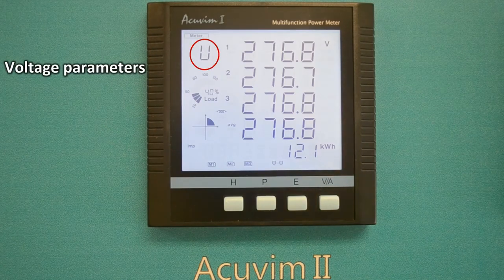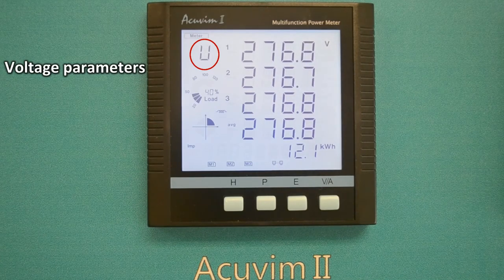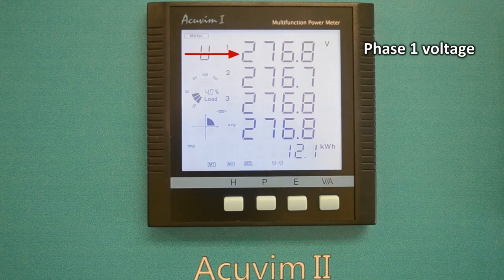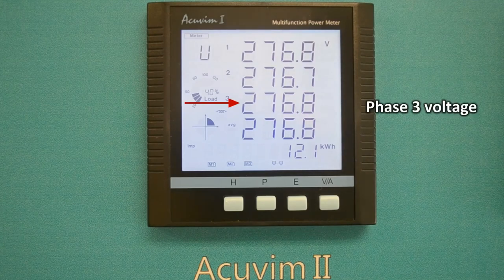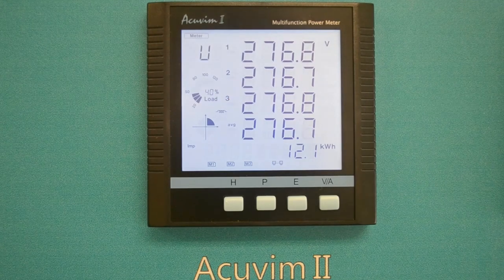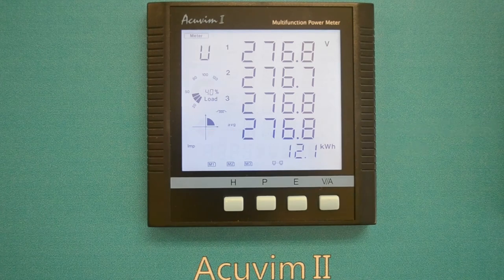The letter U in the upper left corner of the main display section means the meter is now displaying voltage parameters. Here is where phase 1, 2, and 3 voltages and the average voltage of the three phases are displayed.